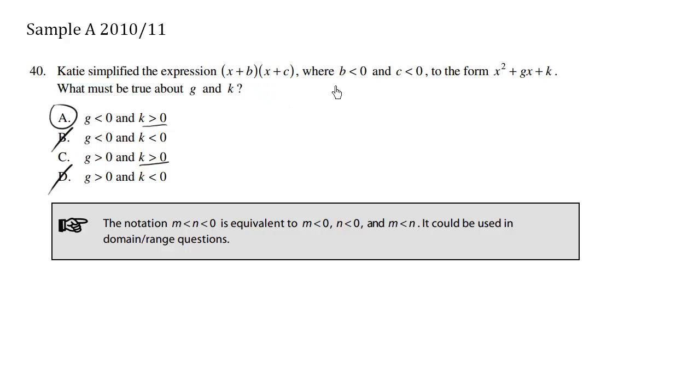To see this a bit more concretely, this is a bit abstract. It's nice to actually try out a real example. So let's just try out x - 2. We'll say that b is actually -2. And we have x - 3, so c is also negative.